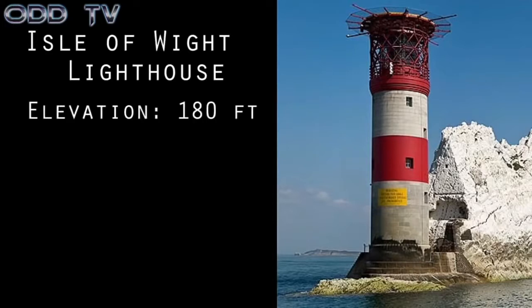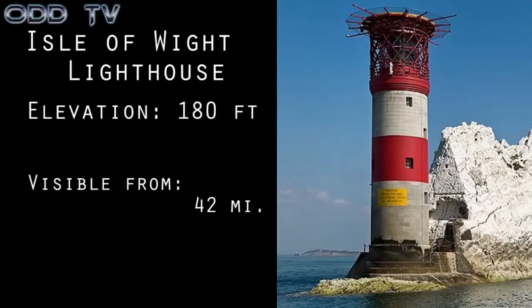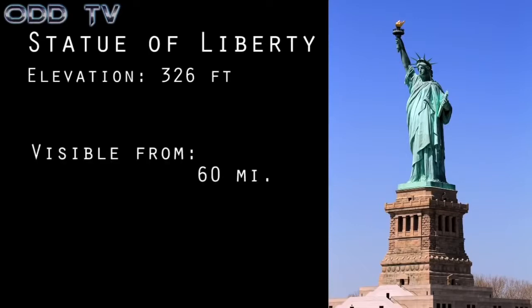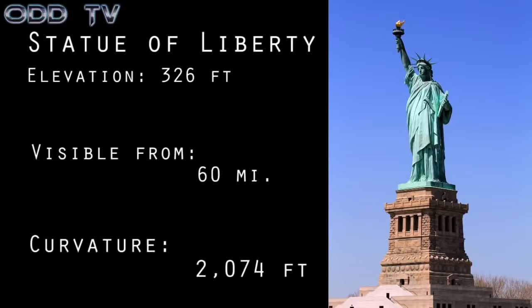Lighthouses are a great example. The Isle of Wight lighthouse in England is 180 feet high and can be seen up to 42 miles away — a distance at which modern astronomers say the light should fall 996 feet below the line of sight, yet you can still see it. Another example is the Statue of Liberty: it stands 326 feet above sea level and on a clear day can be seen as far as 60 miles away. If the earth were a globe at the dimensions given, that would put Lady Liberty an impossible 2,074 feet below the horizon.